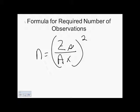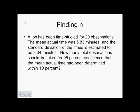So, we are taking a look at finding n. A job has been time studied for twenty observations. We've already taken twenty observations and the mean actual time was five point eight three minutes. And the standard deviation of the times is estimated to be two point zero four minutes. They're being nice enough to give it to you. How many total observations should be taken for ninety-five percent confidence that the mean actual time has been determined within ten percent?